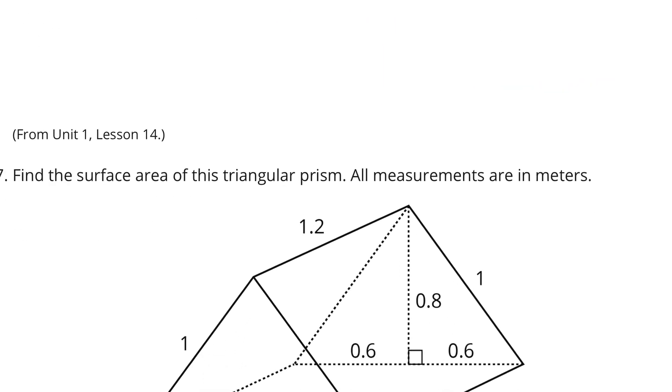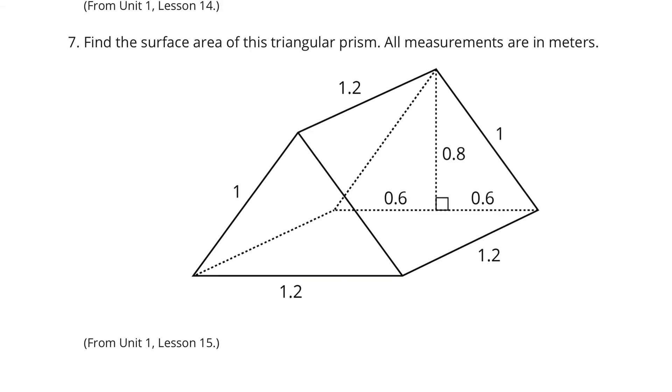All right. Let's continue on to our last question, and that is, find the surface area of this triangular prism. All measures are in meters. Wow. It's an interesting triangular prism here. Let's break this down into our faces. And the first face I want to look at is the triangle here, because if I can find the area of this triangle, then I have two sides done already. Well, this triangle looks like we have a base of 1 and 2 tenths, and this height coming down is 8 tenths. And so, if area of a triangle is equal to base times height divided by 2, we're going to have 1 and 2 tenths times 8 tenths, and divided by 2, and 1 and 2 tenths times 8 tenths is 96 hundredths. Divided by 2 is going to be 48 hundredths.